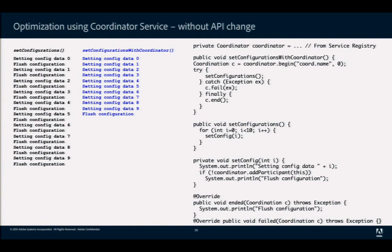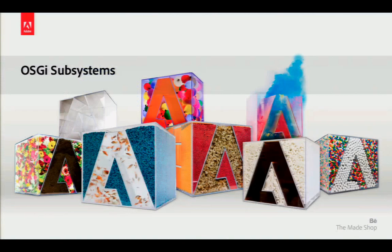A participant can also fail the coordination by throwing an exception, which can be caught by the initiator — similar to failing a transaction. Regarding a question about multiple calls: if you're already registered as a participant, you don't get added again. That's part of the API design — you can simply call add-self and it will only be registered once. This allows higher-level entities to start a coordination, and lower-level methods to join it without knowing the full picture.